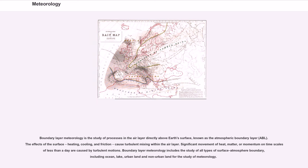Boundary layer meteorology is the study of processes in the air layer directly above Earth's surface, known as the Atmospheric Boundary Layer, ABL. The effects of the surface—heating, cooling, and friction—cause turbulent mixing within the air layer. Significant movement of heat, matter, or momentum on time scales of less than a day are caused by turbulent motions. Boundary layer meteorology includes the study of all types of surface-atmosphere boundary, including ocean, lake, urban land, and non-urban land for the study of meteorology.